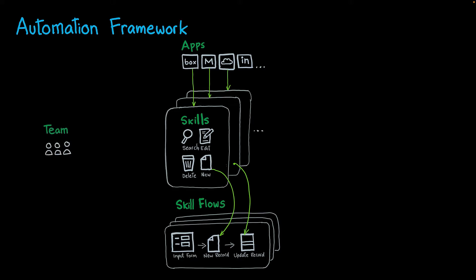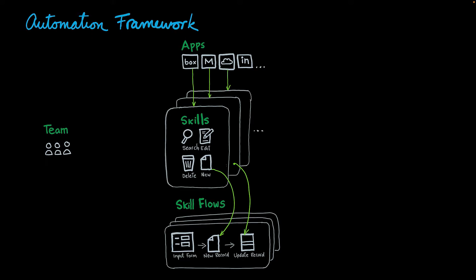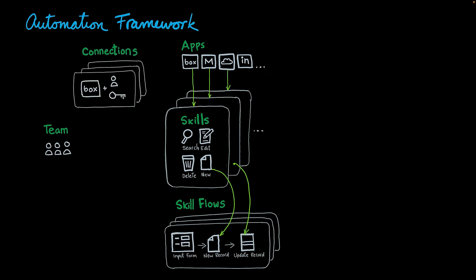So how do you access the skills and skill flows you've created? Within Watson Orchestrate, you can create a team. But before the team can access the skills or skill flows, you have to create connections to the apps. The connections store the credentials or API tokens needed to authenticate against your application. You can set up connections that are the same for the entire team, or set them at the individual level so every person acts with their own credentials. Once you have set up connections to the apps, the skills and skill flows become visible to the team.